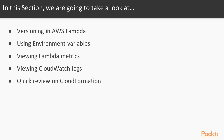First we're going to look at versioning in AWS Lambda. After that, we're going to see how you can use environments in a Lambda function — how do you actually work with variables. We're going to look at how to view Lambda metrics.